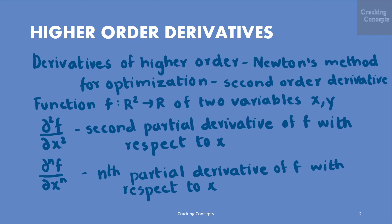Let us consider a function f from two-dimensional space to one-dimensional space, of two variables x and y. We use the following notation for higher order partial derivatives: ∂²f/∂x² is the second partial derivative of f with respect to x, and ∂ⁿf/∂xⁿ is the nth partial derivative of f with respect to x.